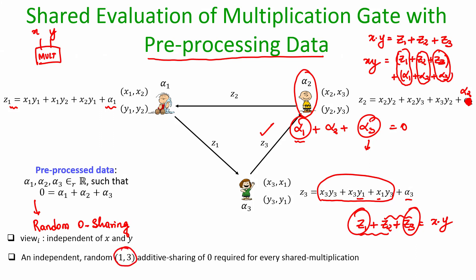For perfect security, for every multiplication gate an independent and randomly chosen additive sharing of 0 must be used from the preprocessing phase. So if you have L number of multiplication gates, you need L independent random additive (1,3)-secret sharings of 0. Why (1,3) secret sharing of 0? Because the corrupt party will have either alpha1, alpha2, or alpha3 — one alpha value — and would not know the remaining two. To reconstruct the full vector of alpha values, collaboration of two parties is needed. That is why it is a (1,3) additive sharing of 0.